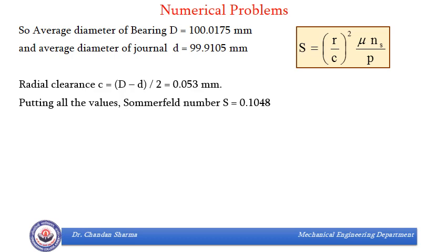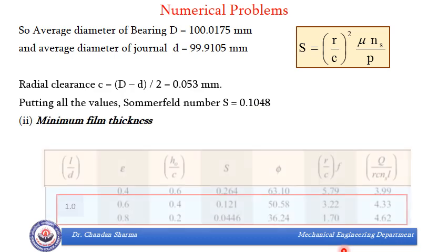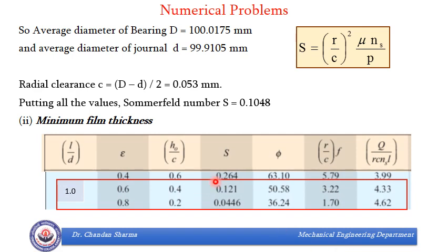This information is used to find radial clearance because we want to enter Raimondi and Boyd table and for that we require either H0 or S. So with this, we found what is C and then putting the value of C here because mu in terms of Z was given and S is known to us, C we have already found, R we have already determined. So S came out to be 0.1048. Now for L by D 1 and S equals to 0.1048, we can easily find from the Raimondi and Boyd table, what would be H0 by C, what would be FR by C, what would be Q upon RCNSL. Again, exact value of this S is not available in the table. So we will again take help of interpolation method.